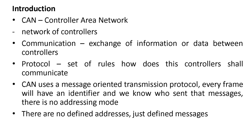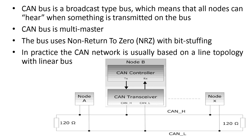I have given here some explanations of what communication is and what a protocol is. CAN uses a message-oriented transmission protocol. Every frame will have an identifier, so we know who sent that message, and there is no addressing mode — no defined addresses, just defined messages. CAN bus is a broadcast type bus, which means all nodes can hear when something is transmitted on the bus. Every node is a master.